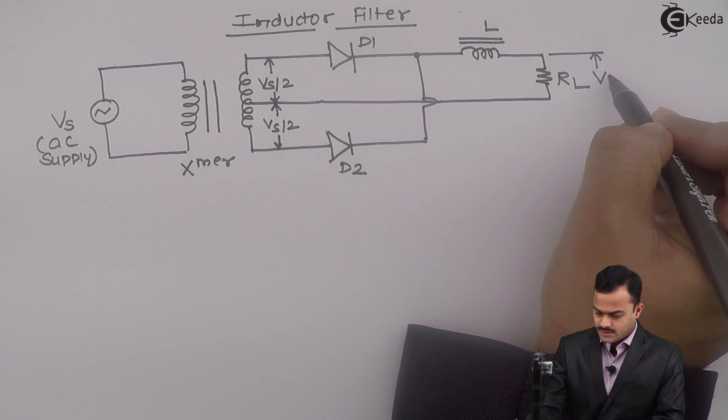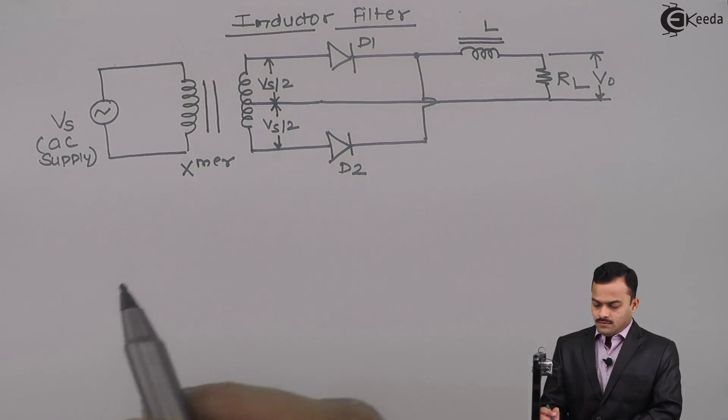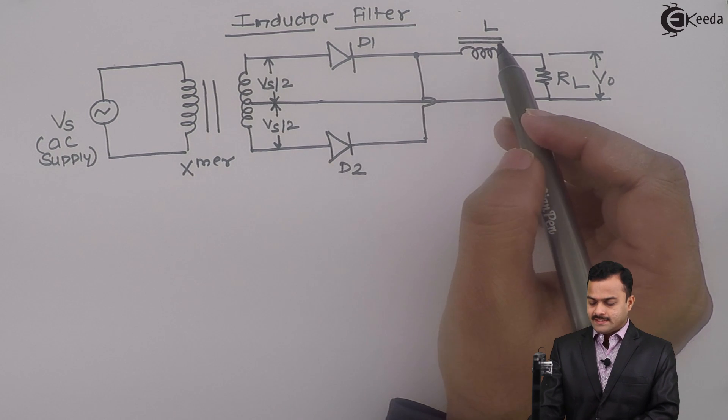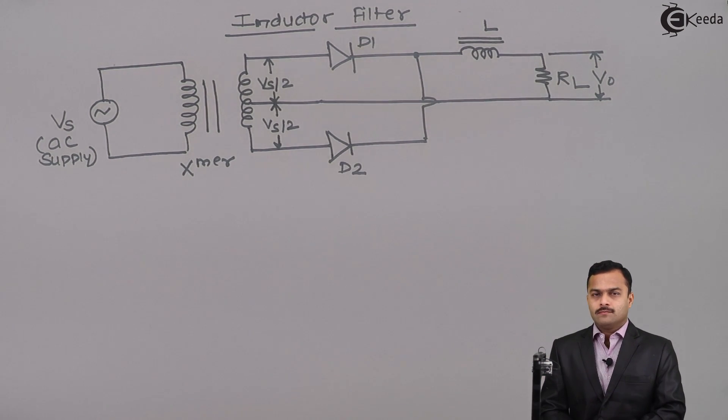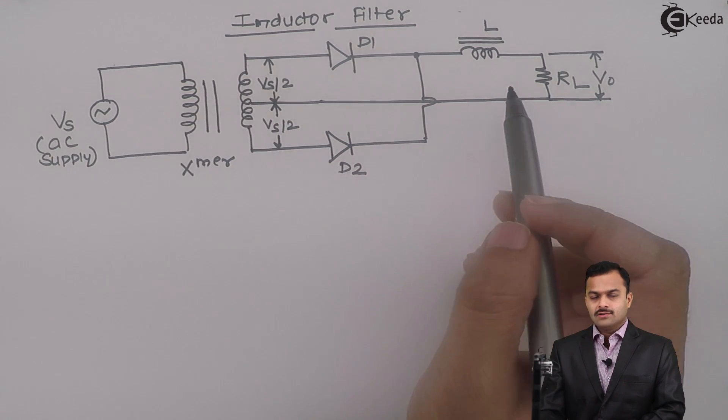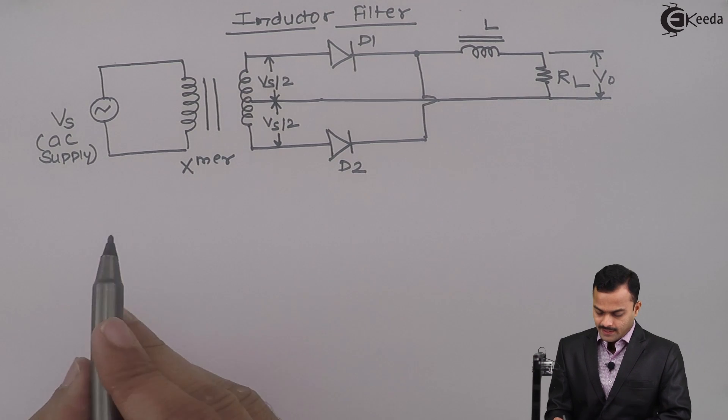So the output voltage is VO. Now, what happened when inductor filter is connected? Before that, let's draw the waveform of a full wave rectifier without inductor filter. So the waveform will be like this.